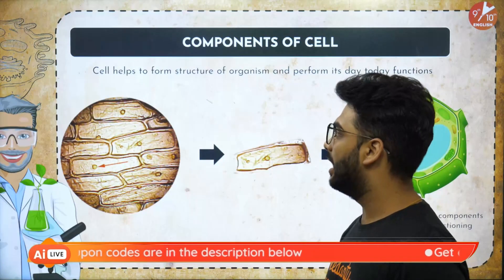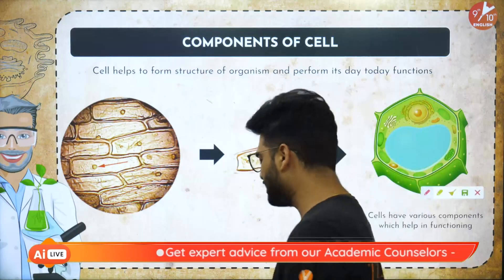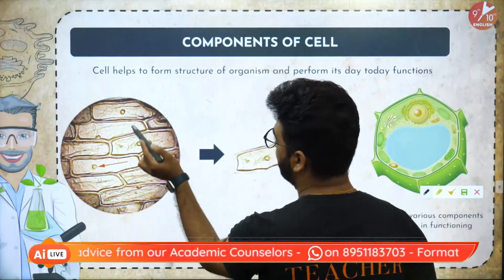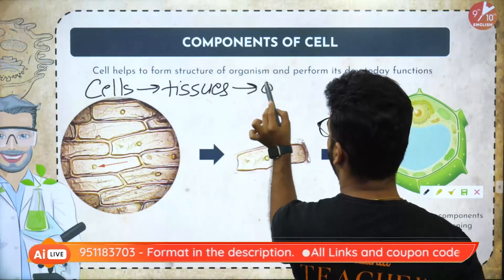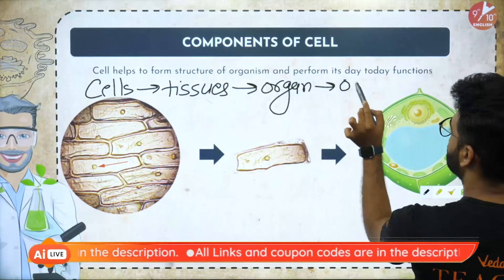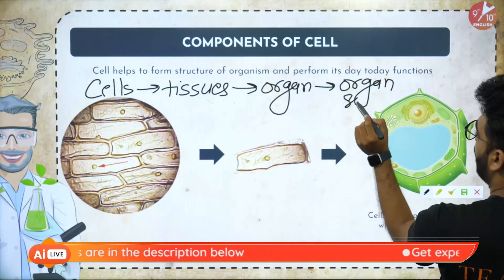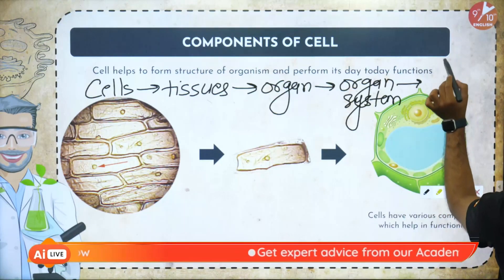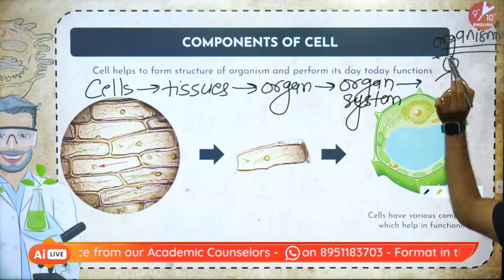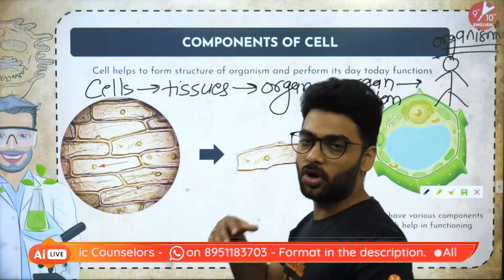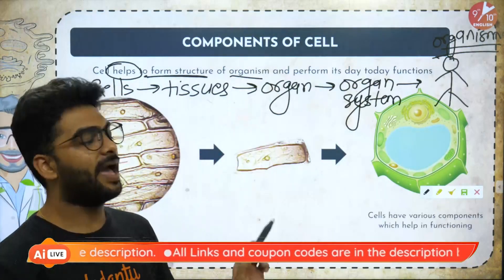Cells help to form the structure of the organism and perform its day-to-day functions. The flow is simple: cells combine to form tissues, tissues combine to form an organ, many organs come together to form an organ system, and when you put all the organ systems together, you get an organism.